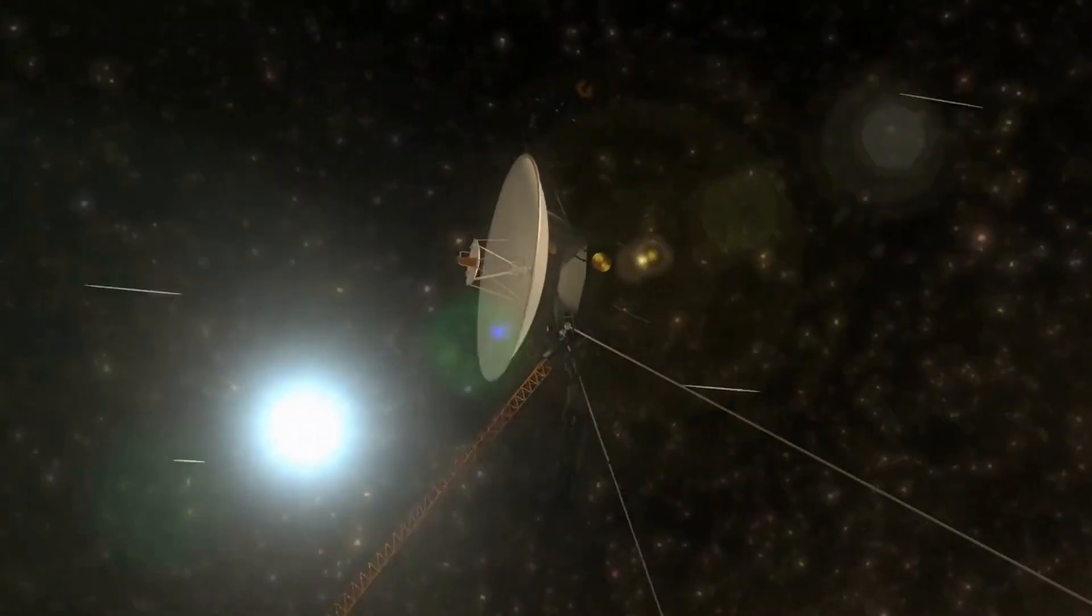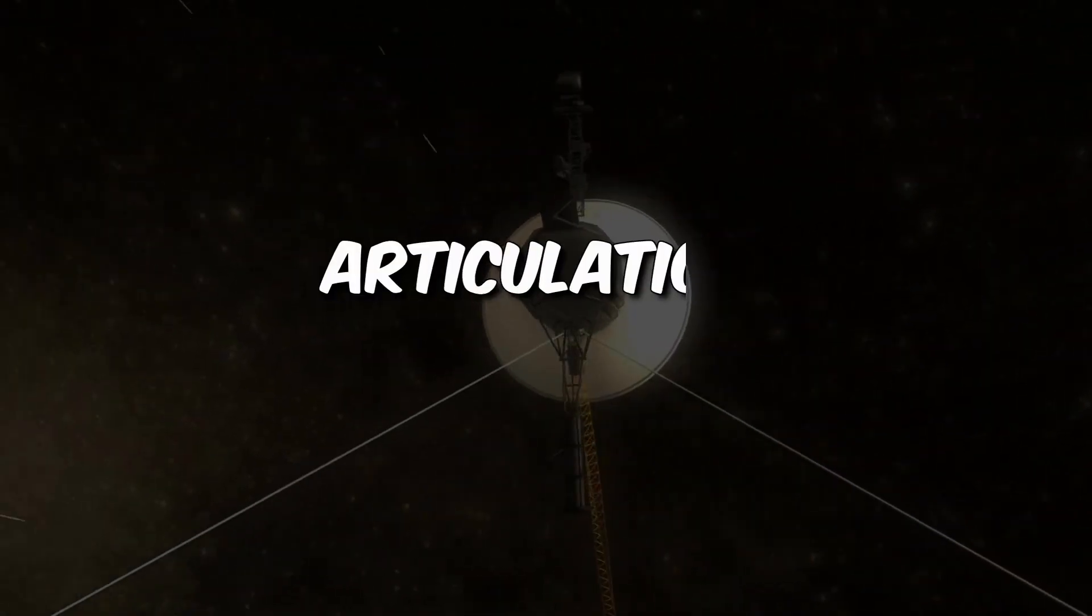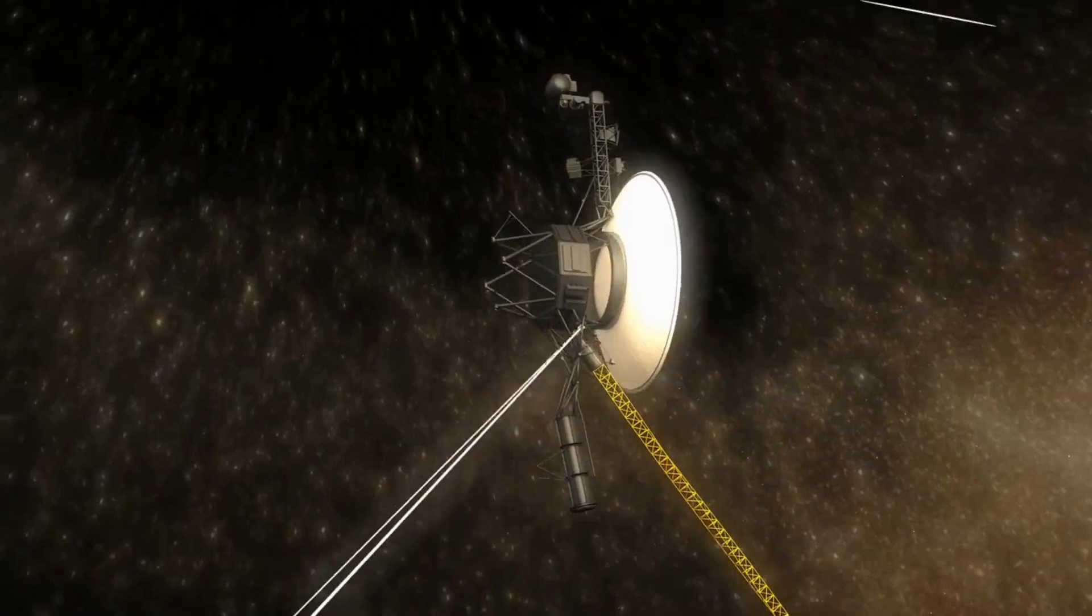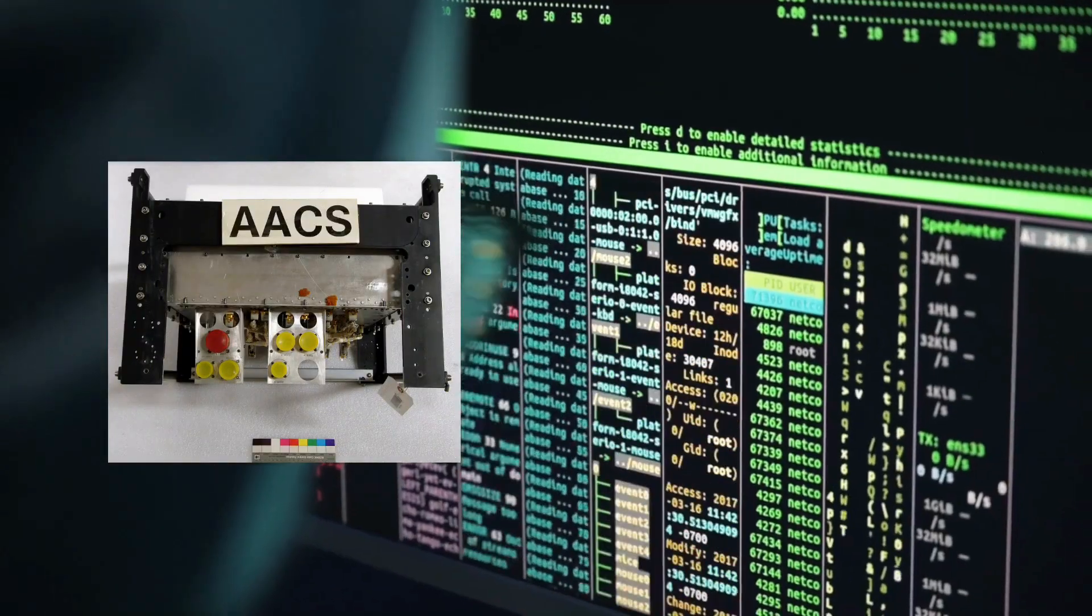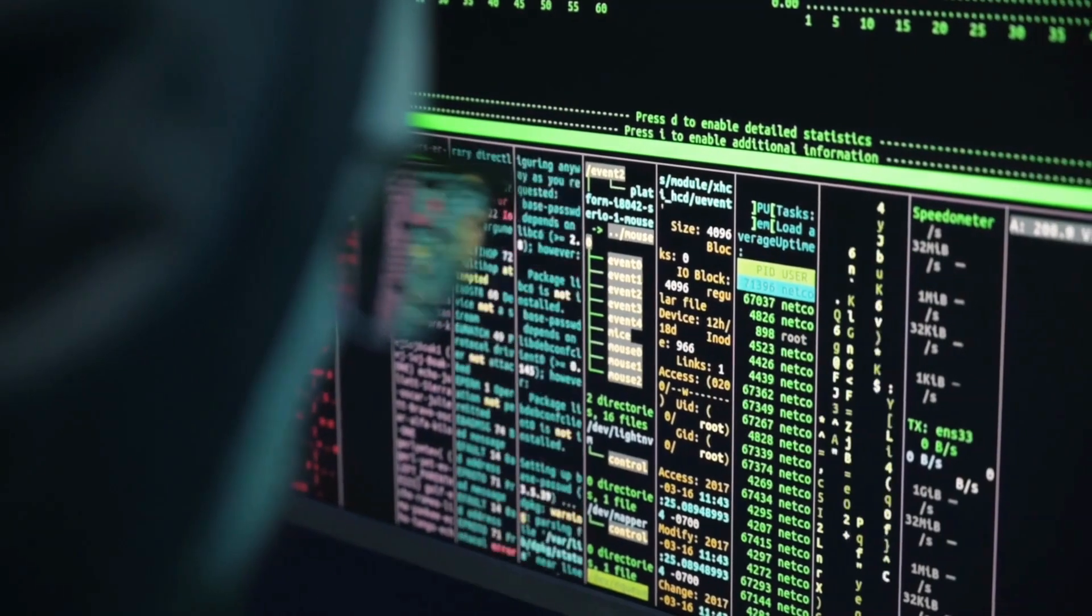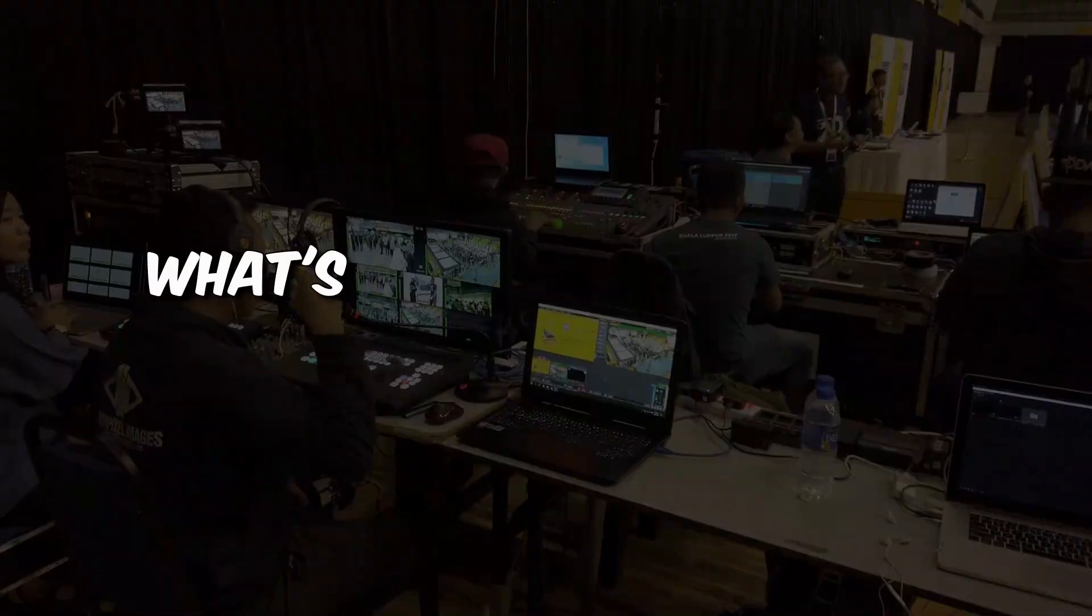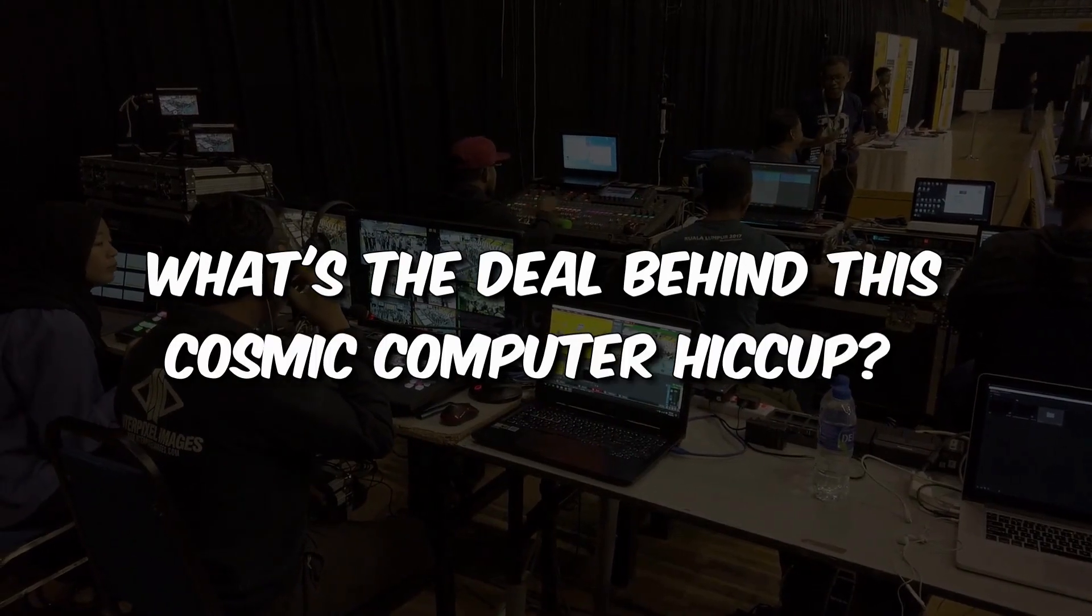But hold on, the real head-scratcher here is why our trusty spacecraft's altitude and articulation control system, AACS for short, suddenly decided to send its telemetry data to the wrong computer. It's a real cosmic conundrum. So, what's the deal behind this cosmic computer hiccup?